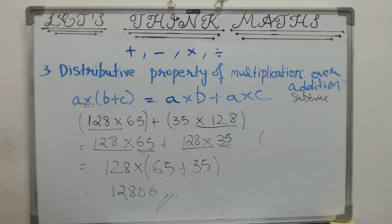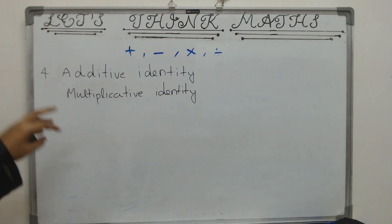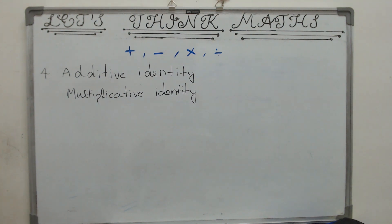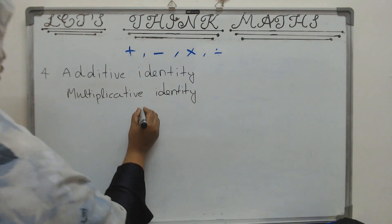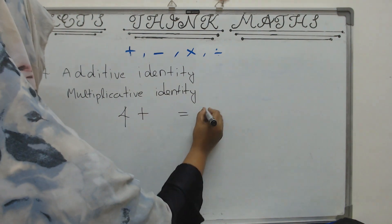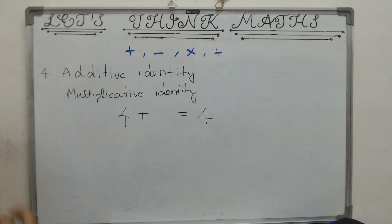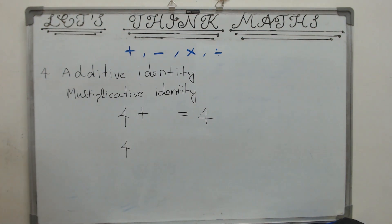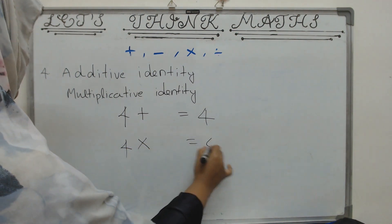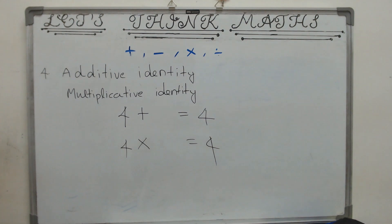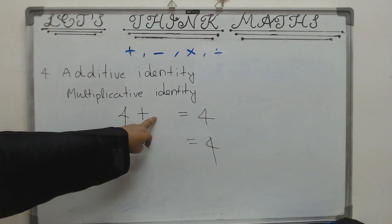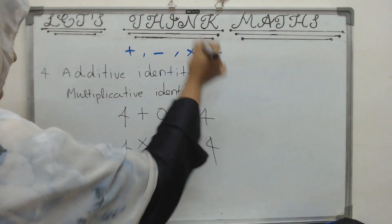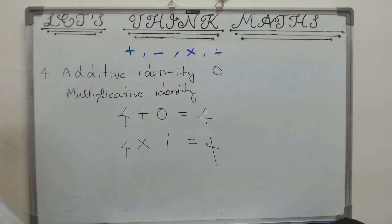We now come to the fourth property about additive identity and multiplicative identity. What is that number which, when added to any number, acts like a mirror and gives that number itself? That is the additive identity: 0. And what is that number which, when multiplied with any number, gives that number itself? That is the multiplicative identity: 1. So 0 is the additive identity and 1 is the multiplicative identity.